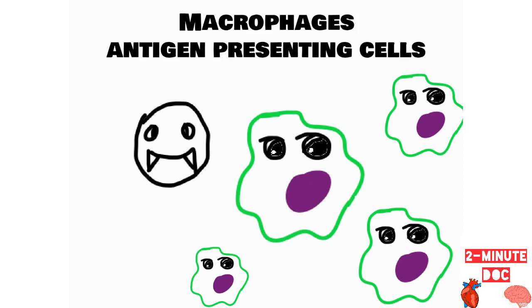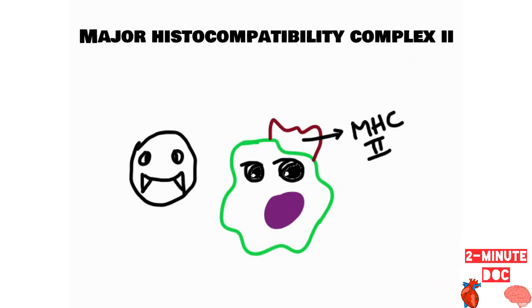So, these people who come into contact with this guy for the first time are actually the macrophages or antigen presenting cells. They come into contact with this foreign antigen for the first time, and they have certain things on them which are called Major Histocompatibility Complex 2, or MHC2.